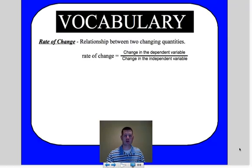The first thing we need to know is what is a rate of change. A rate of change is basically a relationship between two changing quantities. So it's the rate of change in the dependent variable, which goes up and down, and the rate of change between the independent variable, which goes left to right. We're going to use this idea that it's like the delta, which means change in y, over the change in x.